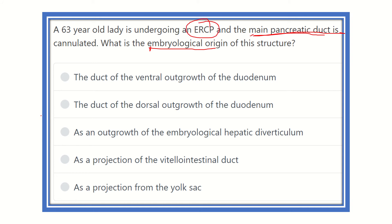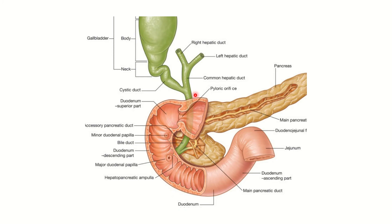The main point from the question: what is the embryological origin of the main pancreatic duct? The options are: the duct of the ventral outgrowth of the duodenum, the duct of the dorsal outgrowth of the duodenum, an outgrowth of the embryological hepatic diverticulum, or a projection of the vitelline intestinal duct — a projection from the yolk sac.